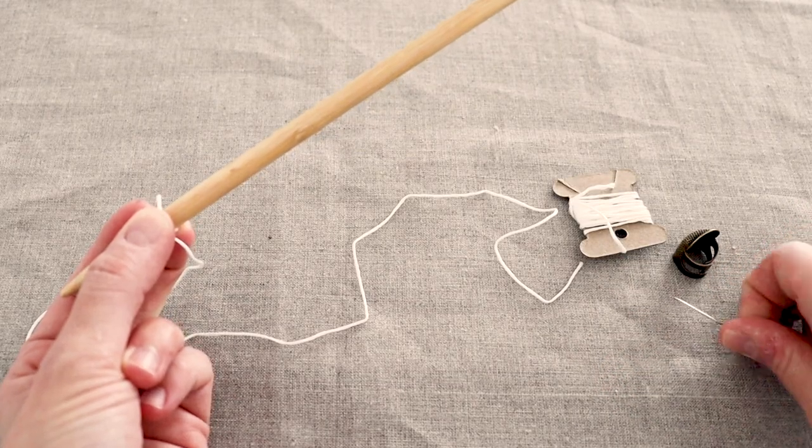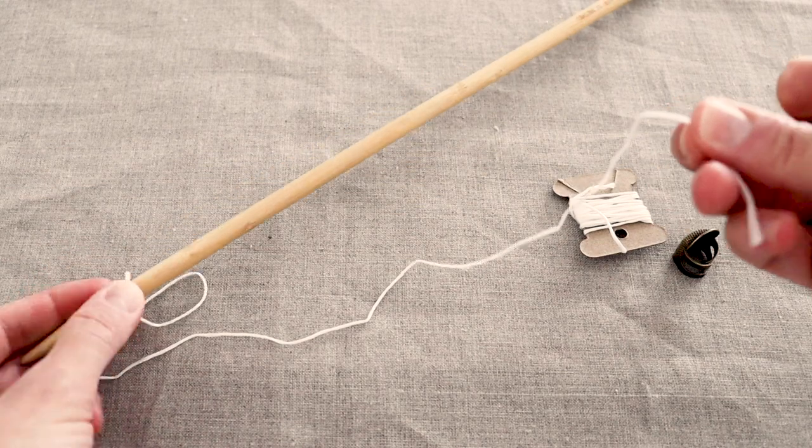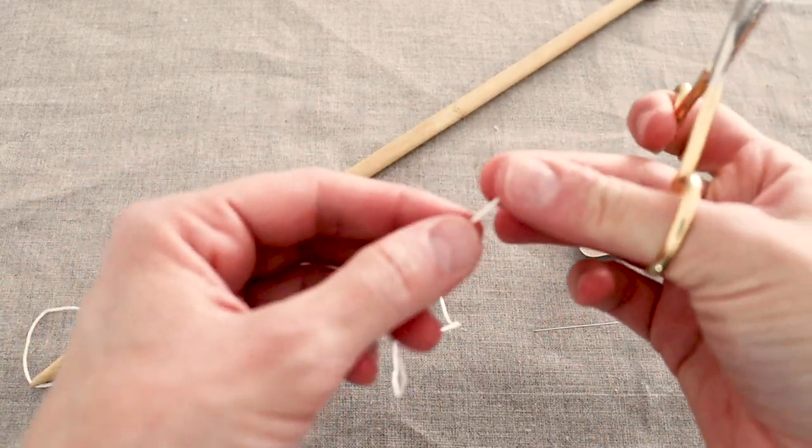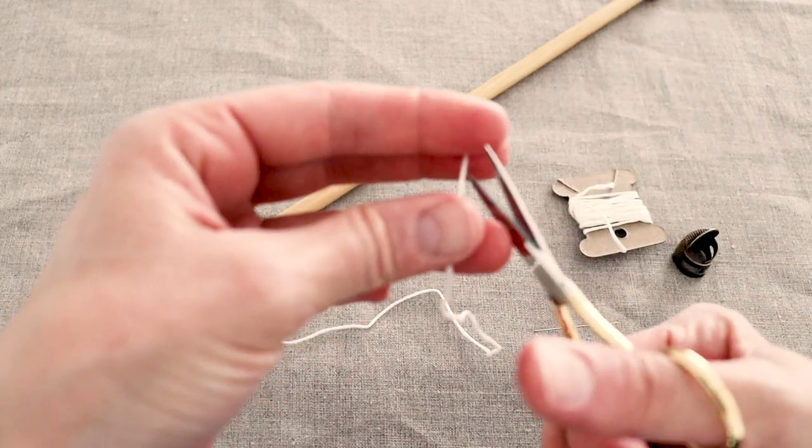It can be tricky getting the thick floss through the eye of a needle. And I prefer to use a small needle for this. One trick I have is to cut the thread at an angle. Wet it with your mouth, and kind of twist the end.